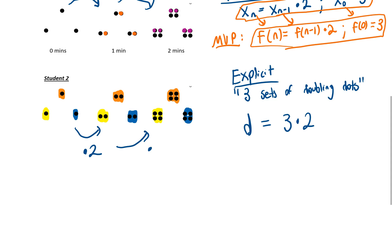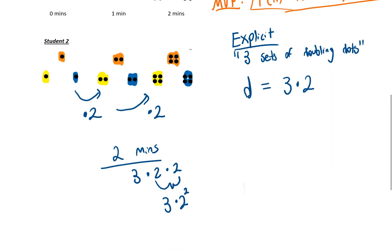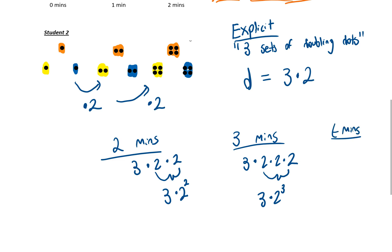To represent that, let T equal time and D equal the number of dots. The number of dots equals 3 sets, each doubling. At two minutes: 3 × 2 × 2, which is 3 × 2². At three minutes: 3 × 2 × 2 × 2, which is 3 × 2³. So at T minutes we're going to have 3 × 2^T dots.